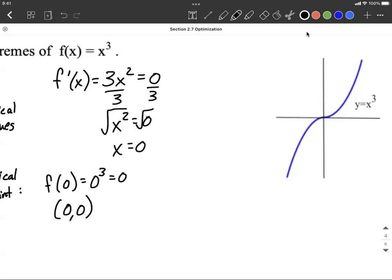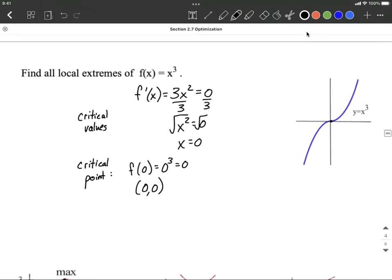So we don't end up having a maximum or minimum at that value, but it's still referred to as a critical point, and the x value of 0 is a critical value or a critical number. We will shortly learn some rules about finding if a critical value is going to be where we get a maximum or a minimum, but that'll be shortly.